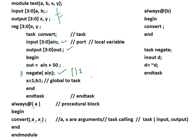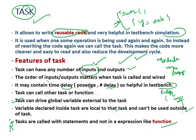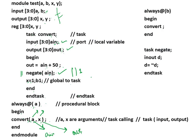So when we call convert(a, x), 'a' maps to 'a_in' (the input) and 'x' maps to 'out' (the output), because the first declared port is input and the second is output. That is why the order of inputs and outputs matters when a task is called. Another procedural block always @(b) also calls the 'convert' task.